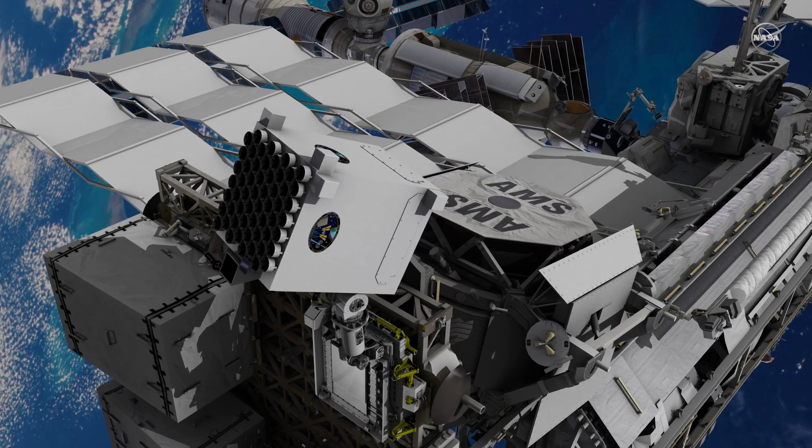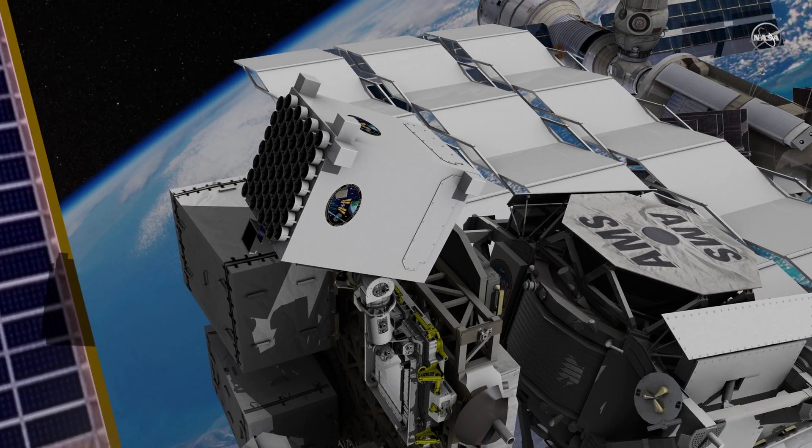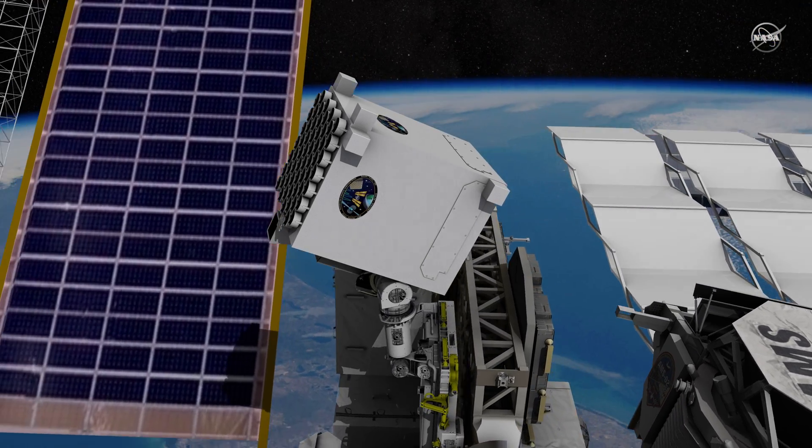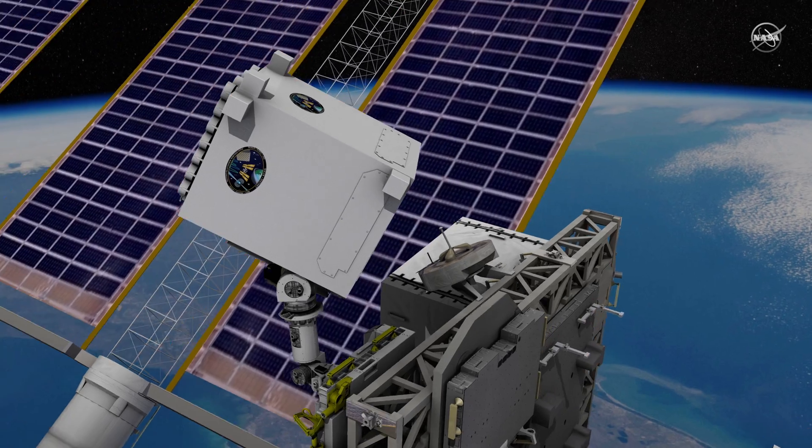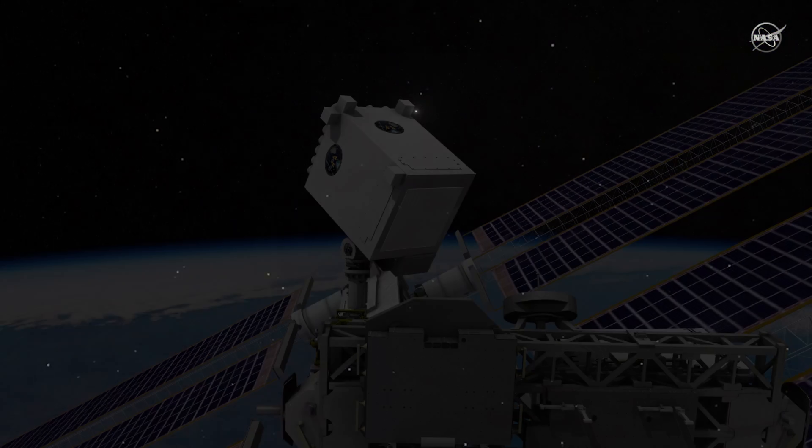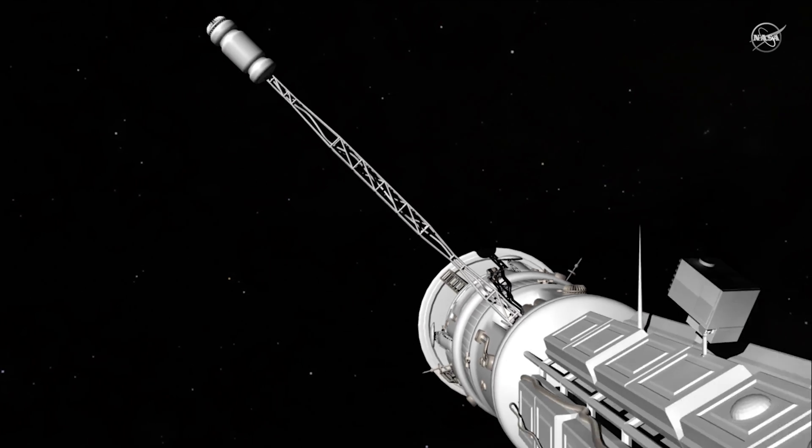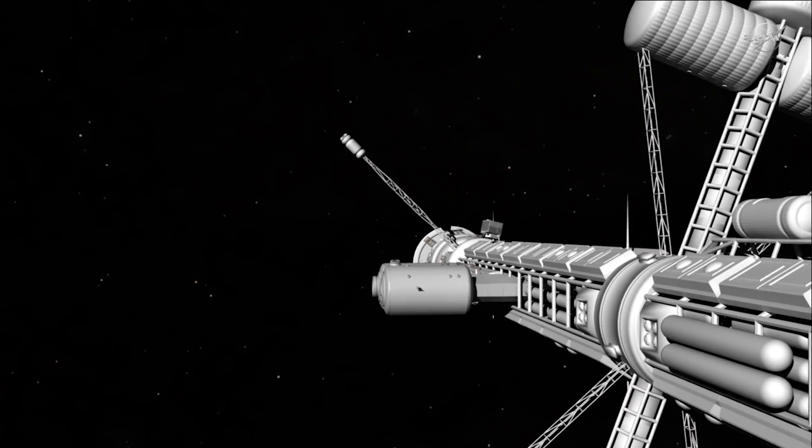A multi-purpose mission, NICER includes a technology demonstration called Sextant. It will analyze NICER's observations to validate the use of rapidly rotating neutron stars as navigation beacons for travel in deep space throughout the solar system and beyond.